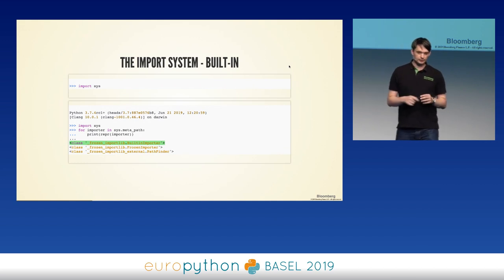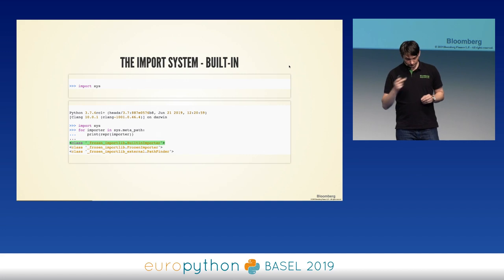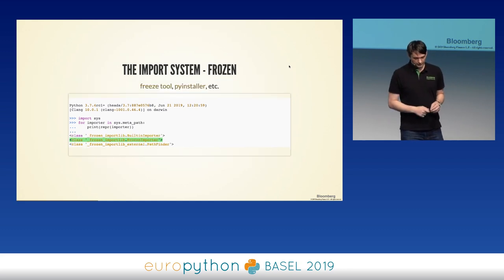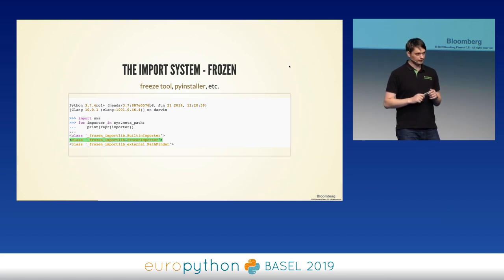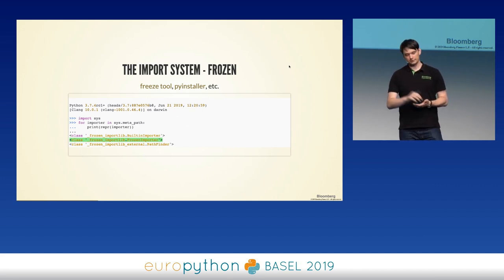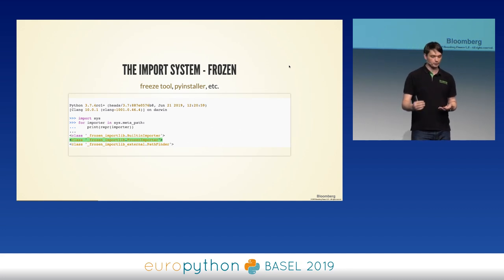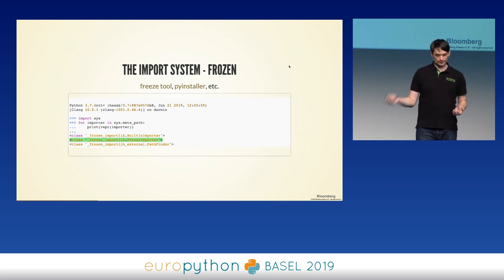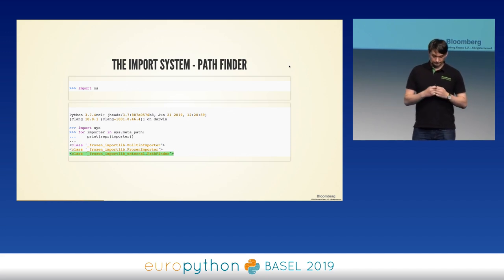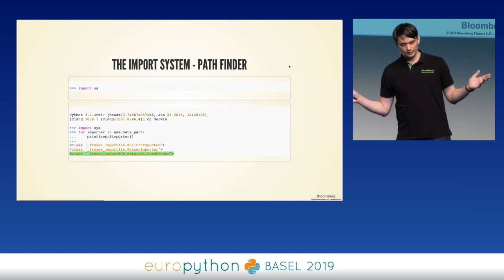The built-in importer is first — it imports elements literally compiled within the CPython binary. For example, there's no sys.py anywhere; sys is already inside the binary itself. Then we have the frozen importer. Freezing means you take Python code, compile it to machine code, and attach it literally into the Python binary. Since it no longer lives on the file system, the frozen importer knows at which location inside the binary to find that element.